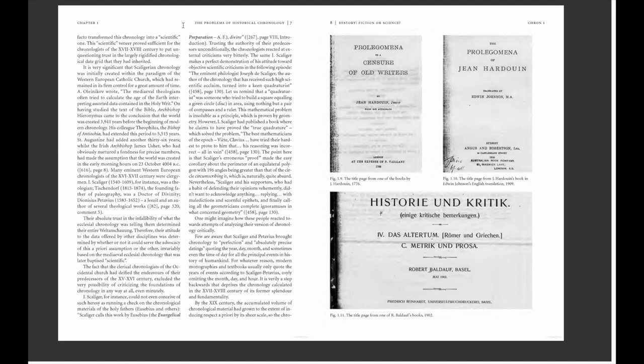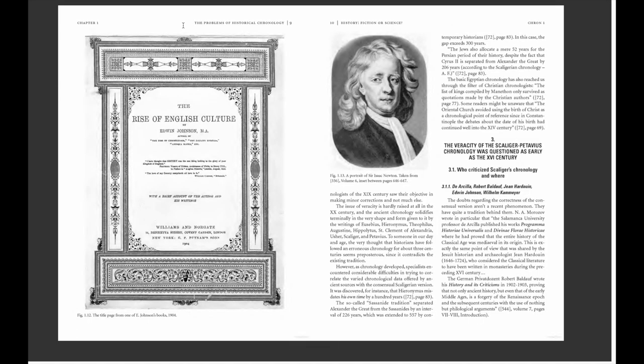By the 19th century, the accumulated volume of chronological material had grown to the extent of inducing respect by its sheer scale. Chronologists of the 19th century saw their objective in making minor corrections and not much else. The issue of veracity was hardly raised at all. In the 20th century, ancient chronology solidified terminally in the very shape and form given to it by Eusebius, Hieronymus, Theophilus, Augustine, Hippolytus, Clement of Alexandria, Ussher, Scaliger, and Petavius. To someone today, the very thought that historians have followed an erroneous chronology for about three centuries seems preposterous.